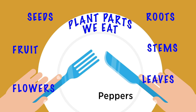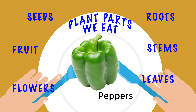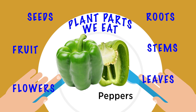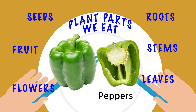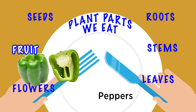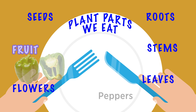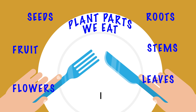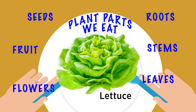Peppers — now peppers don't taste sweet, but they have seeds inside, and if it has seeds inside, it's a fruit. If you eat salads, usually there's some kind of lettuce or spinach as the base, and those are actually leaves that we're eating.